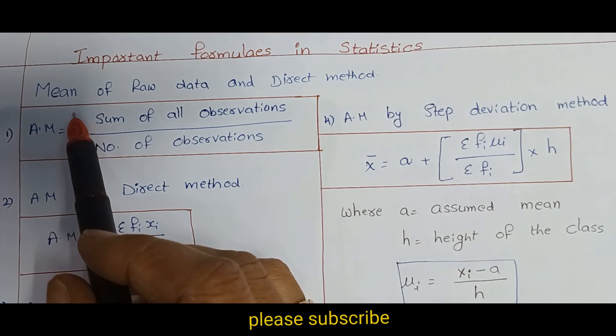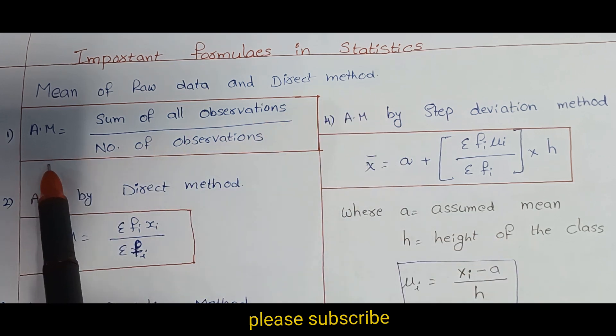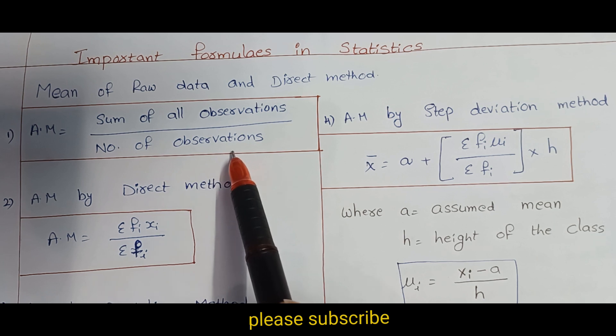Firstly, we will discuss about mean. So, mean of raw data and direct method. Formula of arithmetic mean is sum of all observations by number of observations.